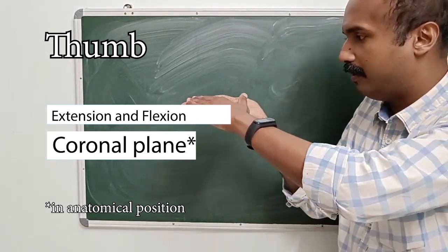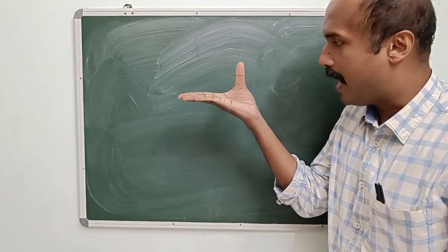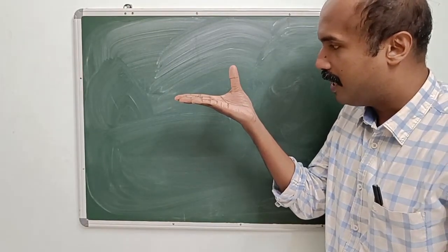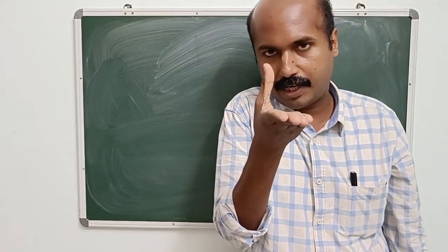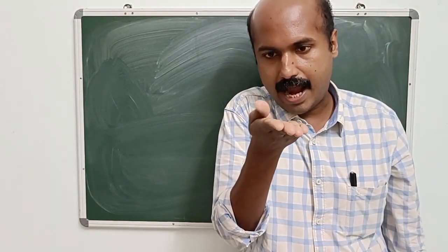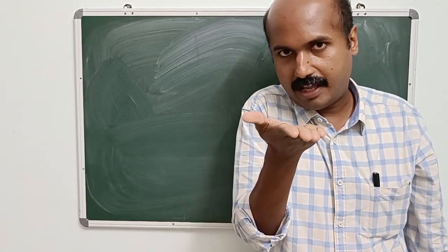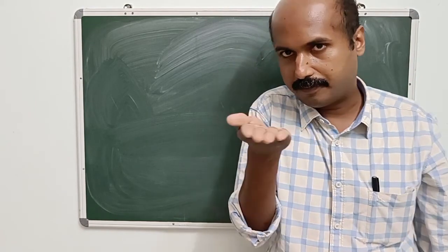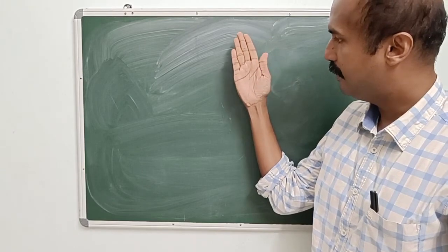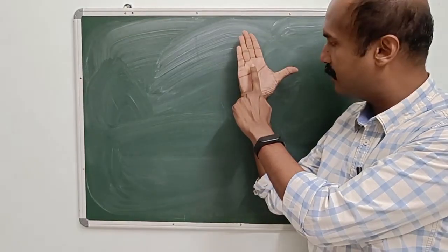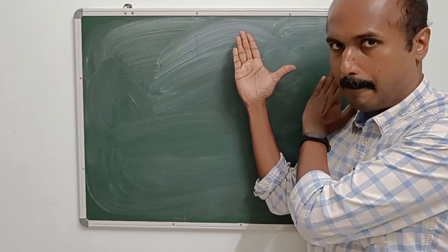Let me illustrate all the movements: abduction, adduction — I will show in this direction also — abduction, adduction. Next is extension and flexion. This is extension and this is flexion. Remember that extension and flexion of the thumb occur in the plane of the palm.